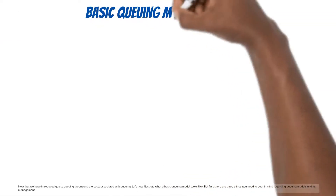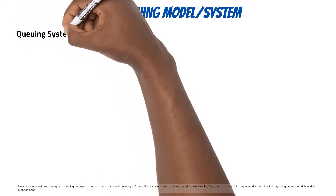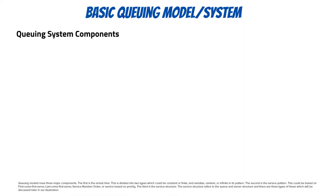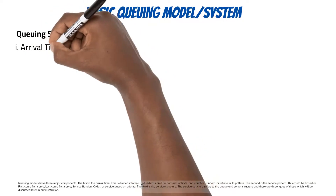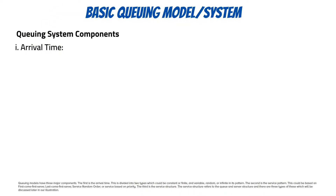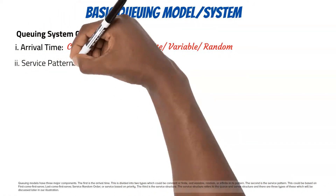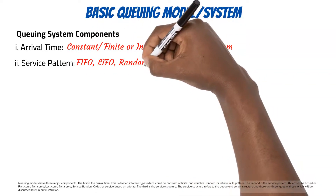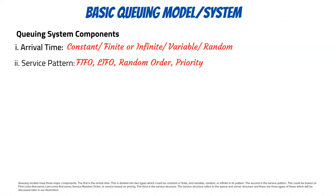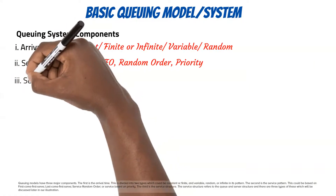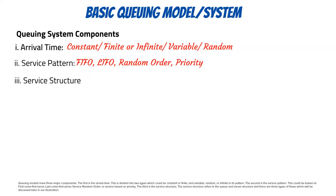Now that we have introduced you to queuing theory and the costs associated with queuing, let's illustrate what a basic queuing model looks like. There are three major components of queuing models. The first is the arrival time, which could be constant or finite, or variable, random, or infinite in its pattern. The second is the service pattern, which could be first come first serve, last come first serve, service random order, or service based on priority. The third is the service structure, referring to the queue and server structure.